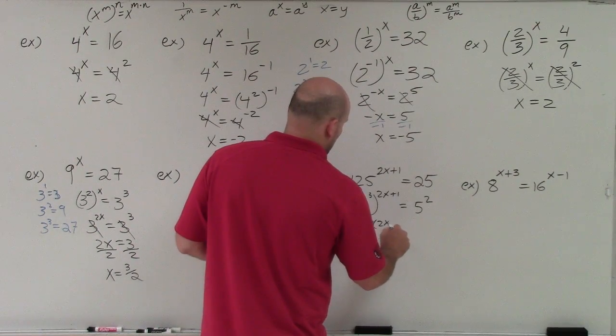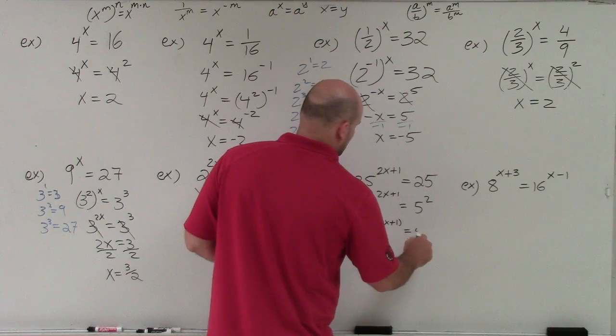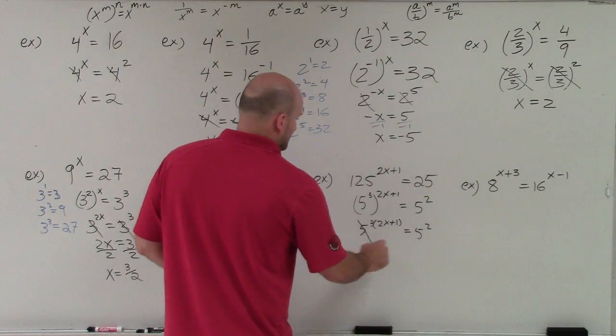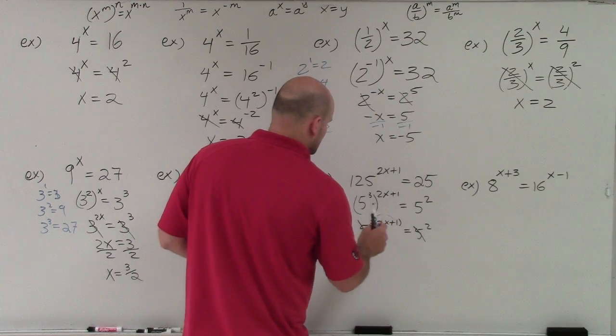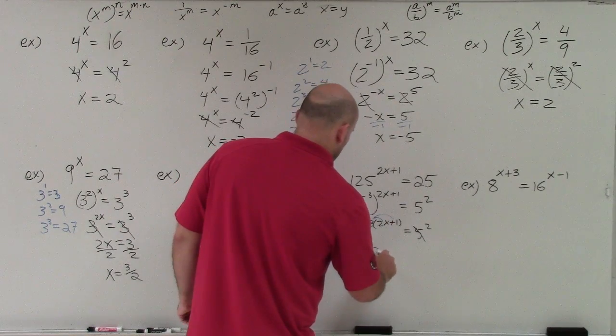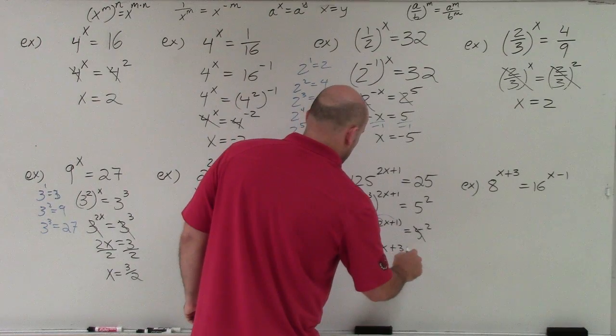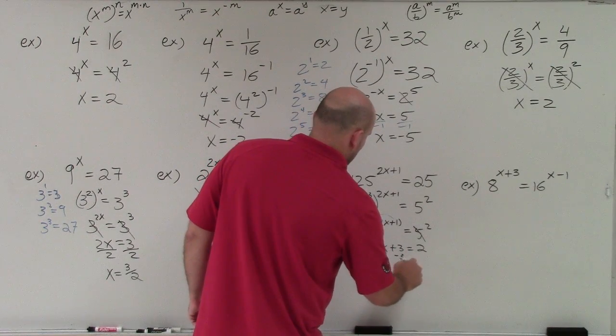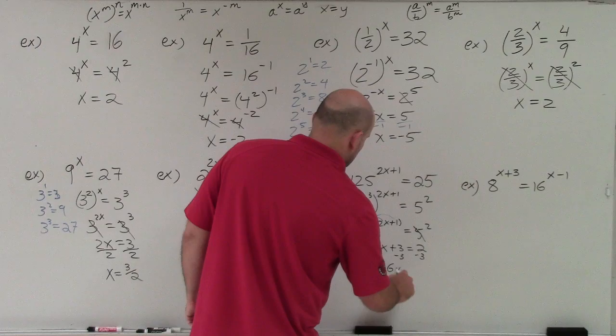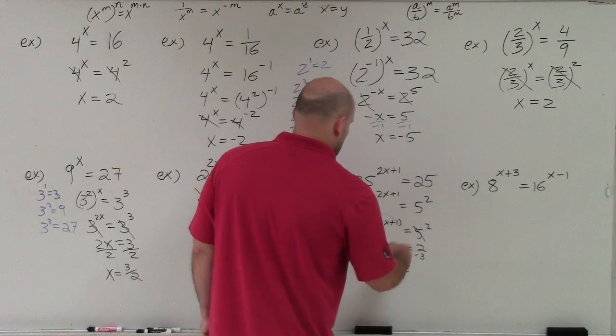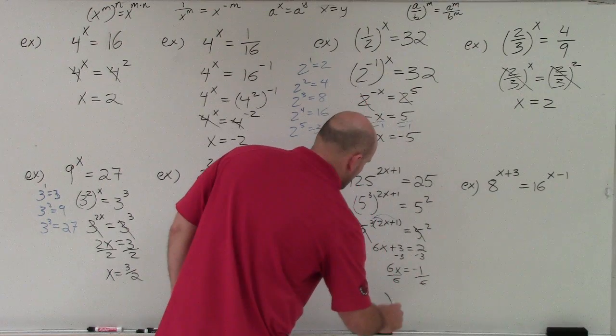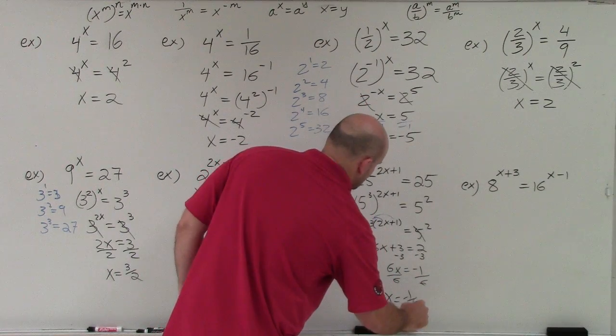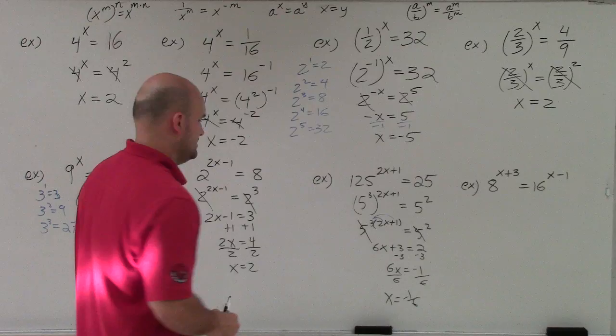Bases are the same. So when I apply the distributive property, I'm going to distribute. So therefore I'll have 6x plus 3 equals 2, minus 3, 6x equals negative 1, divide by 6, x equals negative 1 sixth.